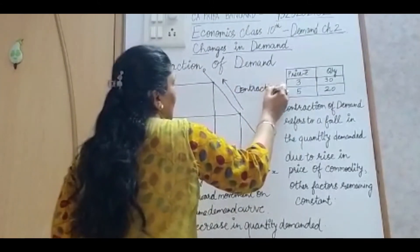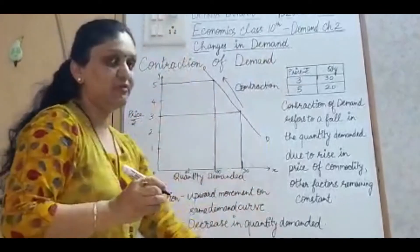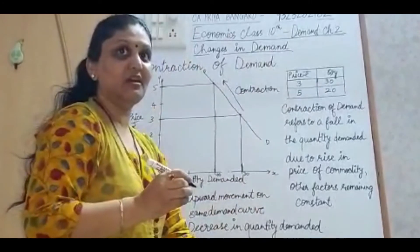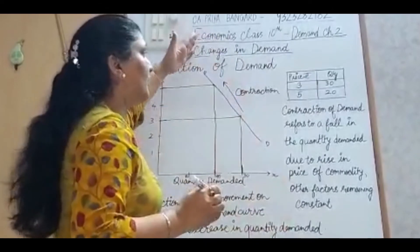In the earlier video, we have studied when it is downward movement on the demand curve, it is expansion, upward movement, contraction.